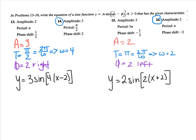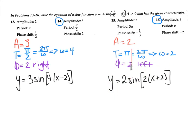Here's the equation for number 16: y equals 2 sine of 2 times the quantity x plus 2. We have an amplitude of 2, a period of π — since π equals 2π divided by omega, that means omega equals 2 — and a phase shift of 2 to the left, so x plus 2. So we've now added vertical shifts and phase shifts, or horizontal shifts, to our sine and cosine graphs.